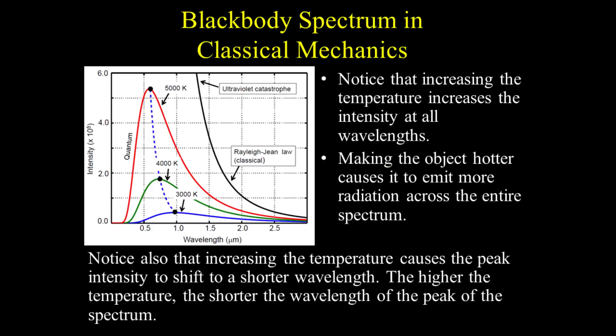Notice that increasing the temperature increases the intensity at all wavelengths — making the object hotter causes it to emit more radiation across the entire spectrum. Notice also that increasing the temperature causes the peak intensity to shift to a shorter wavelength. The higher the temperature, the shorter the wavelength of the peak of the spectrum.